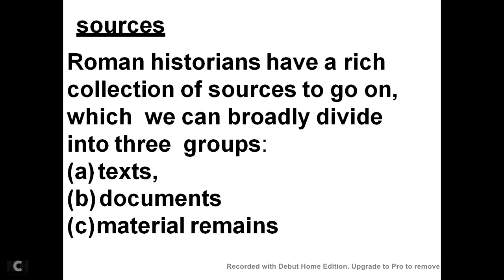Now, first of all, I am telling you about the sources. How can we know about this Roman Empire? Roman historians have a rich collection of sources to go on, which we can broadly divide into three groups. The first one is texts, the second is documents, and the third is material remains.